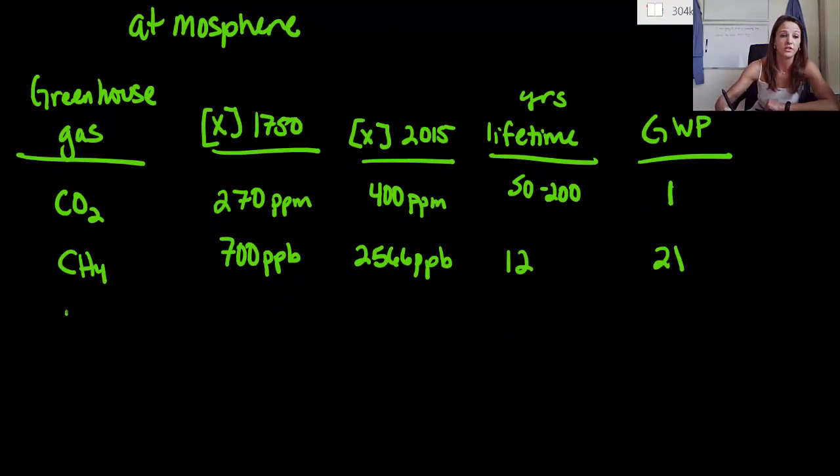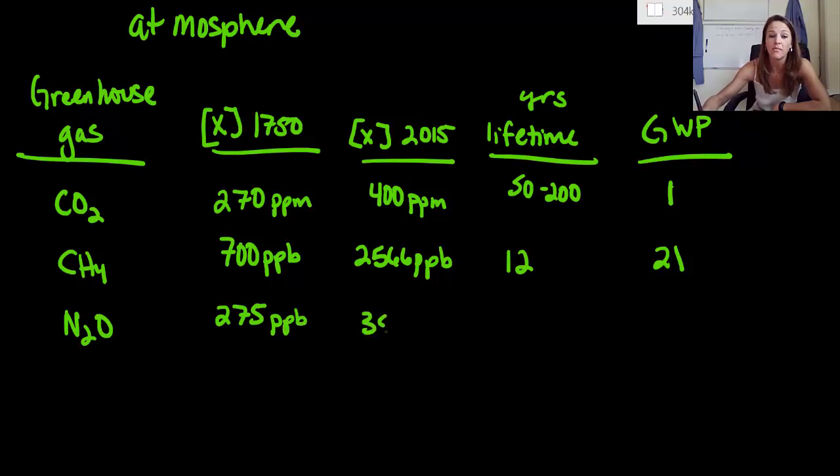Now let's look at nitrous oxide, or laughing gas. Its concentration was originally 275 parts per billion. Now it's right about 350 ppb. It lasts about 120 years, so that's a big problem, which is why it has a global warming potential of 310.